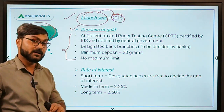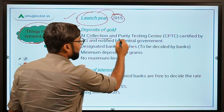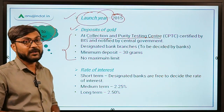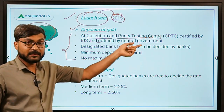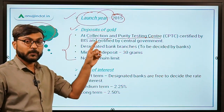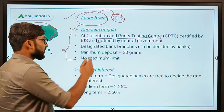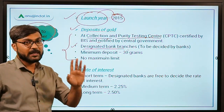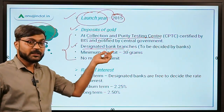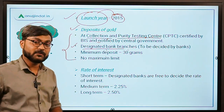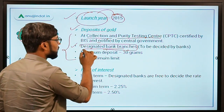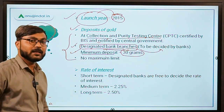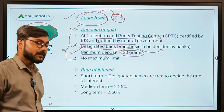Regarding where gold can be deposited: it can be deposited at collection and purity testing centers certified by the Bureau of Indian Standards (BIS) and notified by the central government. Additionally, gold can also be deposited at designated bank branches — a provision added later after the scheme was initially launched. The minimum deposit that can be made into the gold deposit account is 30 grams, while there is no maximum limit.